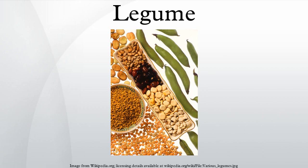Legumes are notable in that most of them have symbiotic nitrogen-fixing bacteria in structures called root nodules. Well-known legumes include alfalfa, clover, peas, beans, lentils, lupins, mesquite, carob, soybeans, peanuts, tamarind, and the woody-climbing vine wisteria.